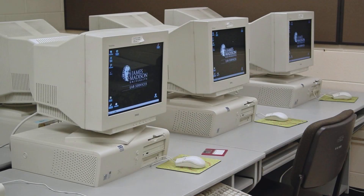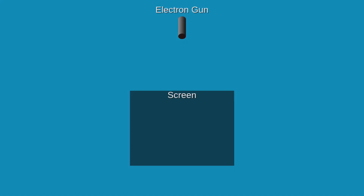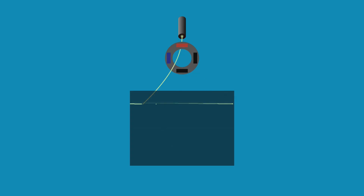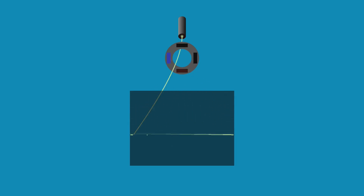Cathode ray tube or CRT displays are pretty much extinct by now, but their legacy in computer graphics is very much alive. A CRT works by projecting a thin beam of electrons onto a phosphor-coated screen. The spot where the beam hits lights up. Electromagnets called deflector coils can deflect the beam, moving the spot of light around the screen. By precisely timing the oscillation of the power to the deflector coils, the movement of the beam can be organized into a repeating pattern where it moves line by line from top to bottom. This pattern is called a raster pattern.